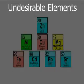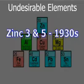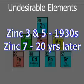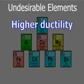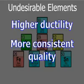Zinc 3 and Zinc 5 were introduced in the 1930s, and Zinc 7 was introduced approximately 20 years later. Since their introduction, purity of the base zinc has been increased to its current level of 99.99%, decreasing the undesirable elements and reducing the levels of magnesium, which is required to offset them. These improvements have led to higher ductility and more consistent quality.